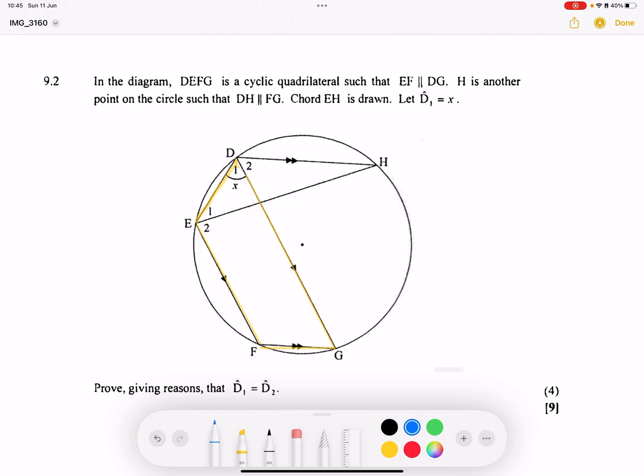Something else that they are telling us is that we've got a quad EH that is drawn. So they say let D1 be equal to X. So they want us to prove, giving reasons, that D1 is equal to D2. I think I missed the part where they gave us those parallel lines there. I'm sure you noted it. EF is parallel to DG. So we've got parallel lines there. Let's just indicate them in some way or another.